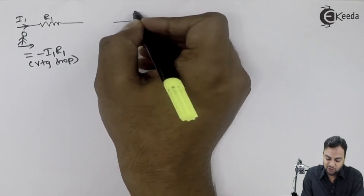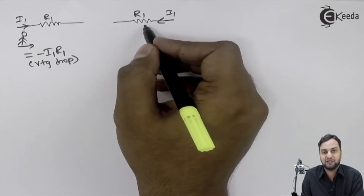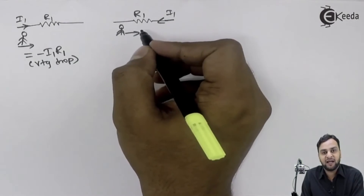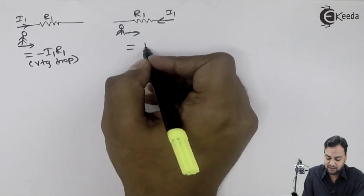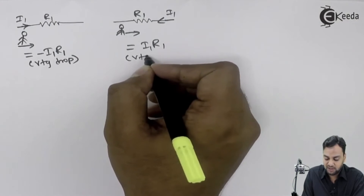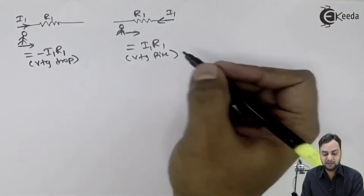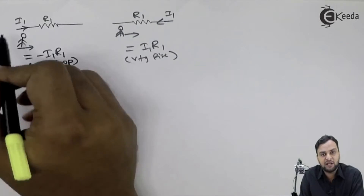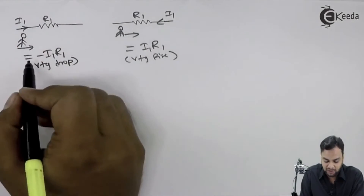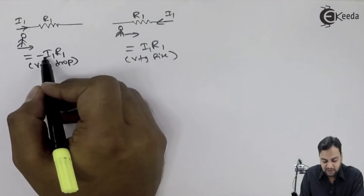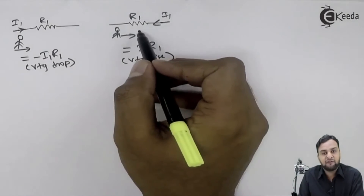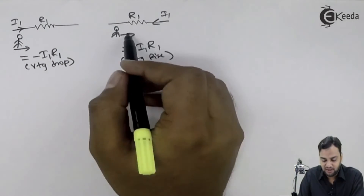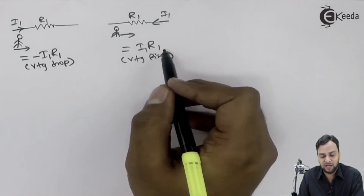Here resistance R1 has current I1 flowing in this direction, and you are applying KVL from the opposite direction — traversing the loop in a direction opposite to that of the current. So you will write this as I1 R1, which is a voltage rise. To summarize: if you are traversing in the same direction as the current, you take minus I1 R1 (voltage drop); if you traverse in the opposite direction, you write I1 R1 (voltage rise).